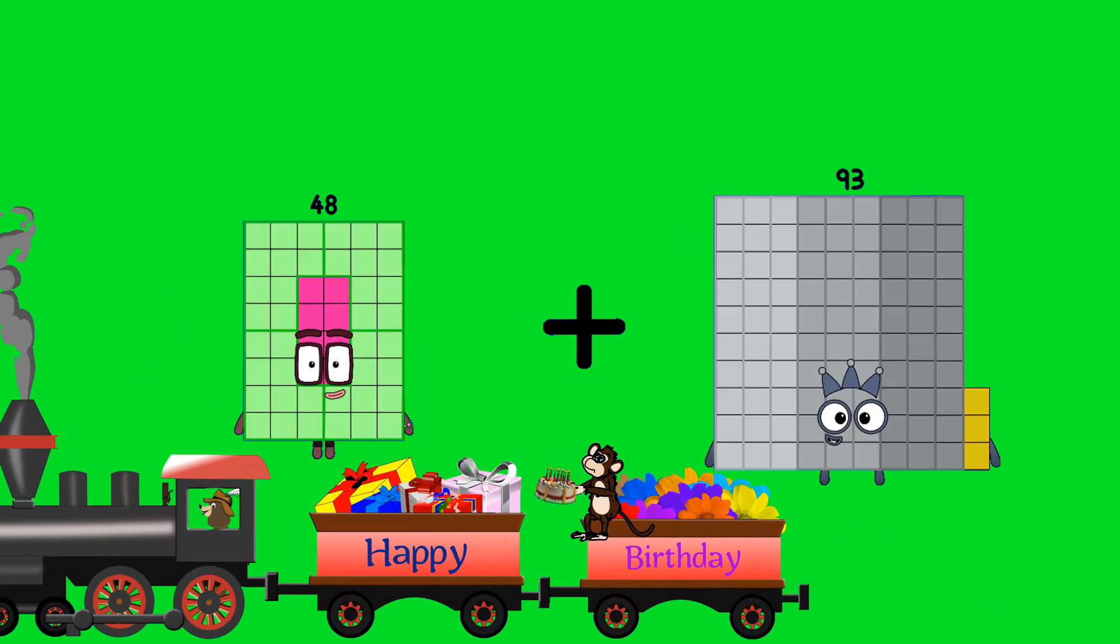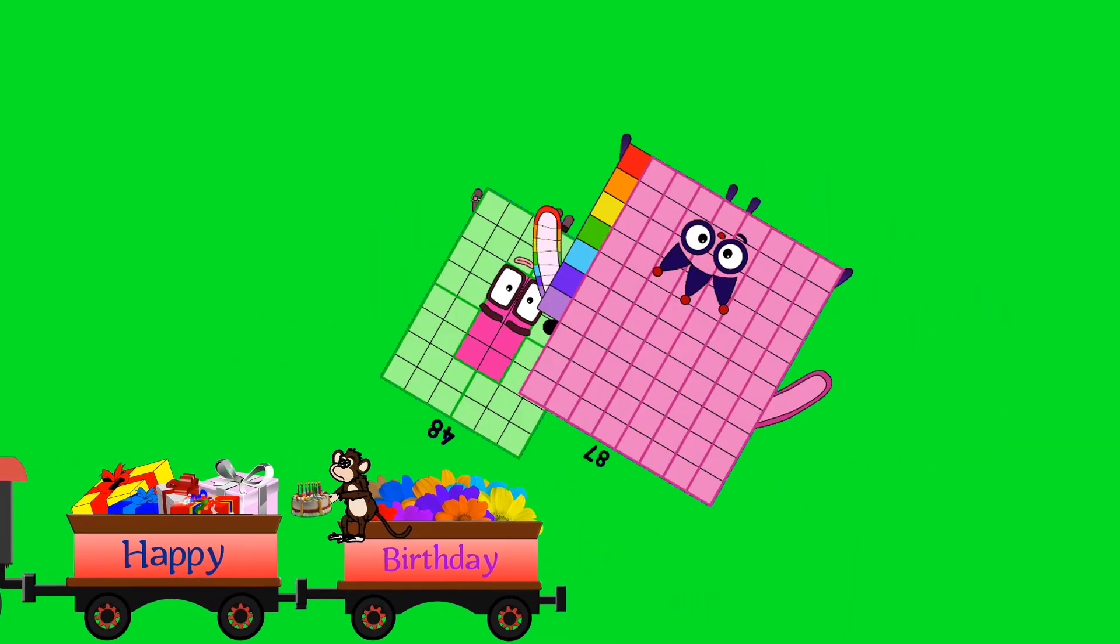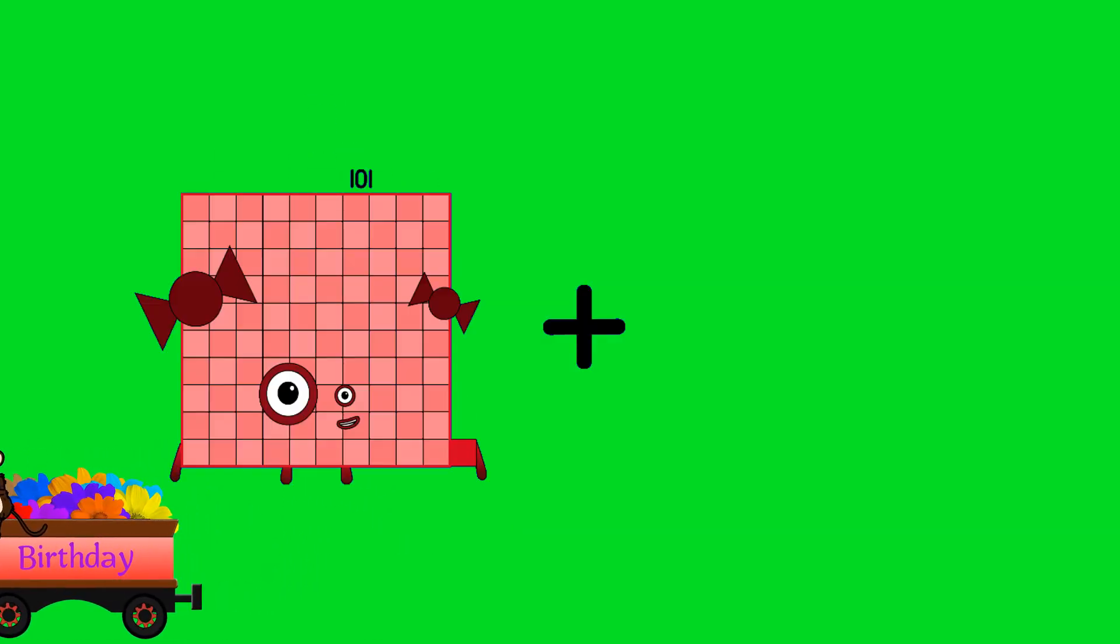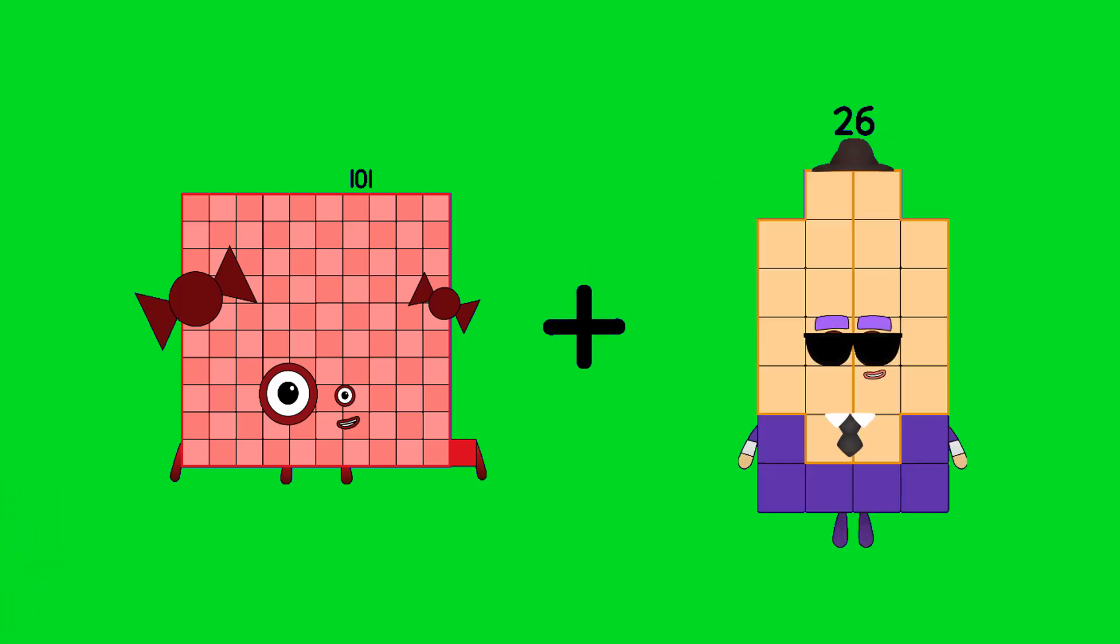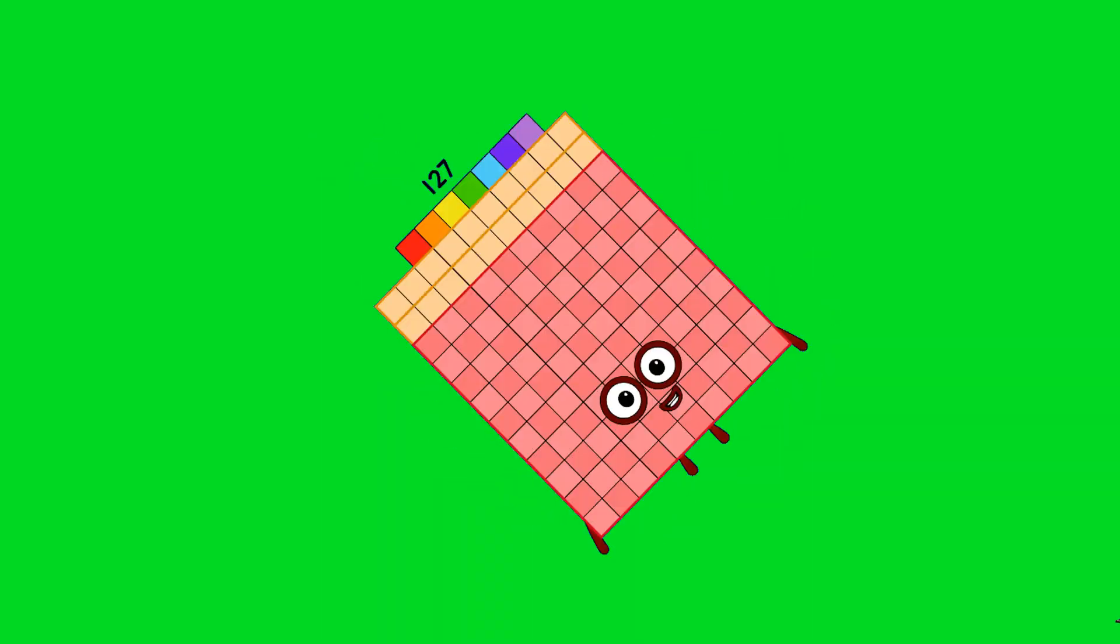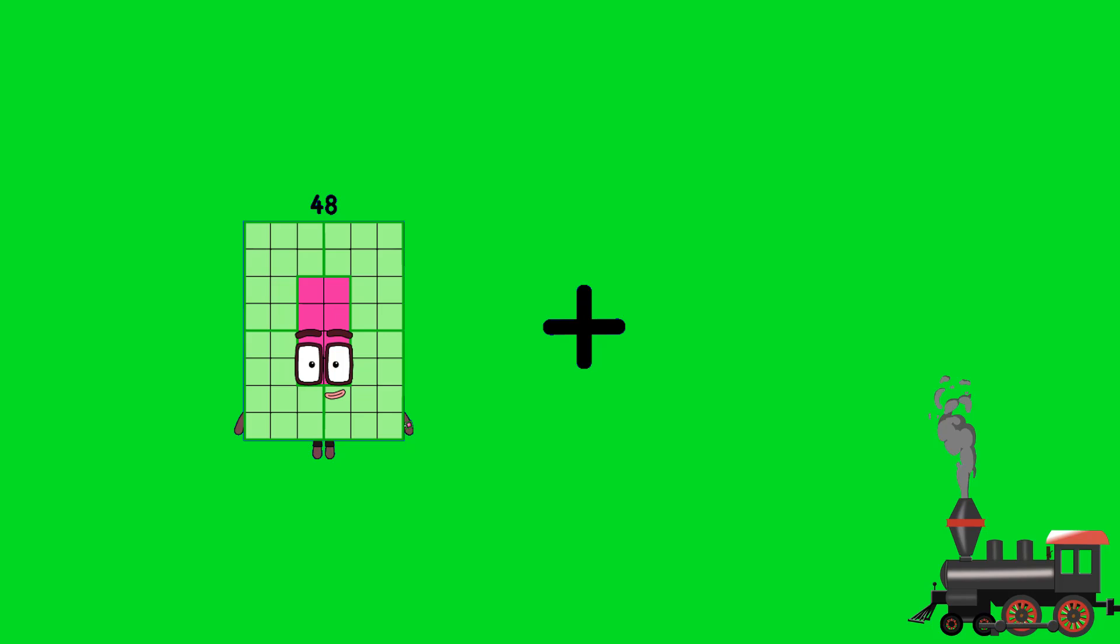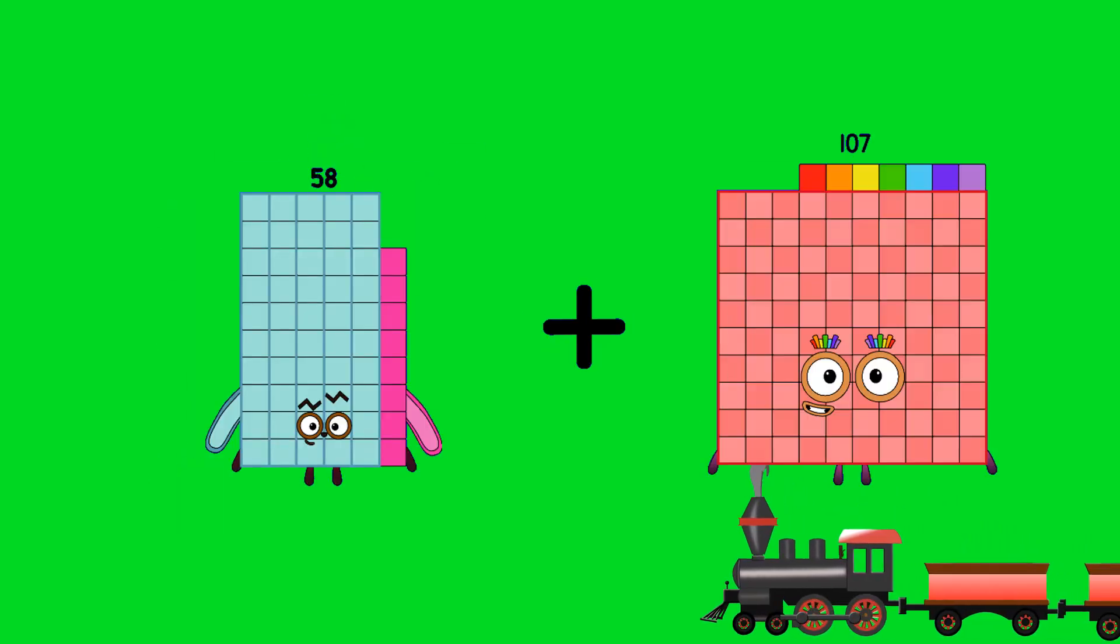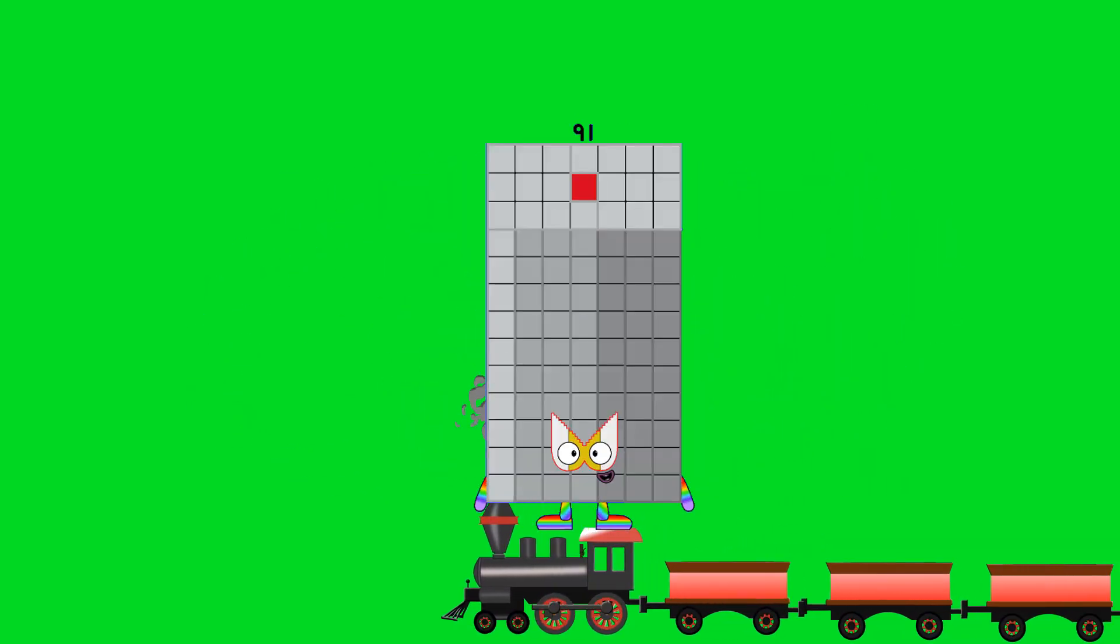48 plus 87 equals 135. 101 plus 26 equals 127. 58 plus 33 equals 91.